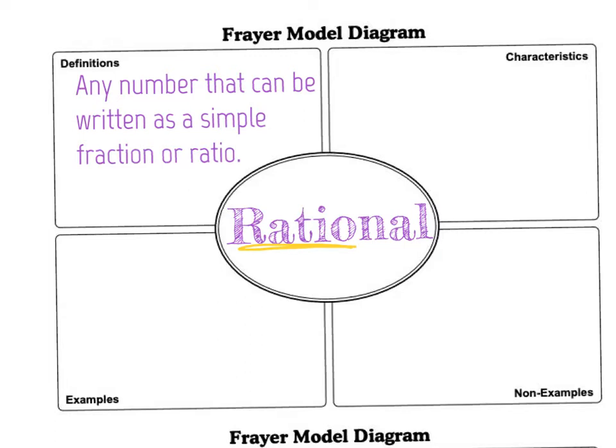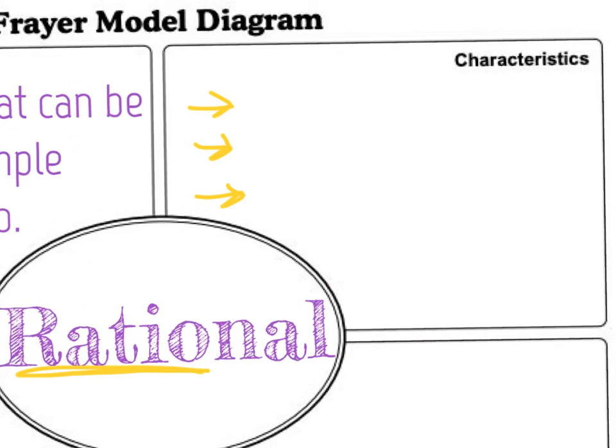Well, let's look at the characteristics. A rational number can be a whole number, because a whole number, like the number 2, can be expressed as 2 over 1 and still be the number 2. So we can write a whole number as a fraction.